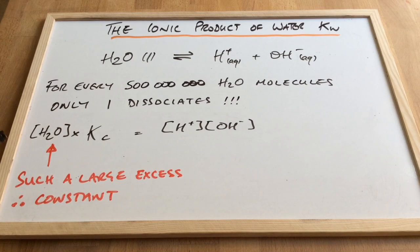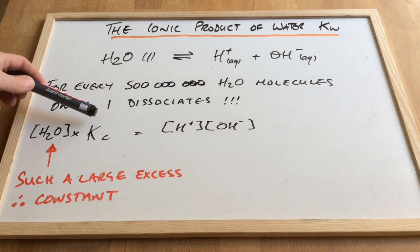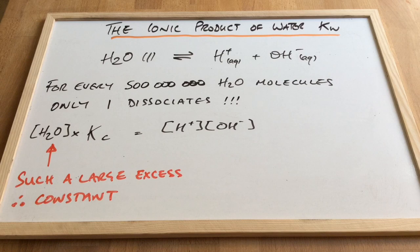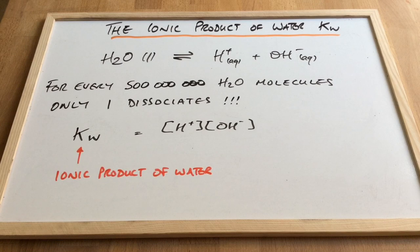Now, what that's going to allow us to do is effectively say we've got two constants multiplied together. And when you get two constants multiplying each other, you always create a new constant. So in the case of water, we get the new constant KW, which we call the ionic product of water.